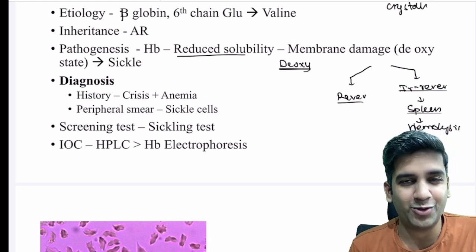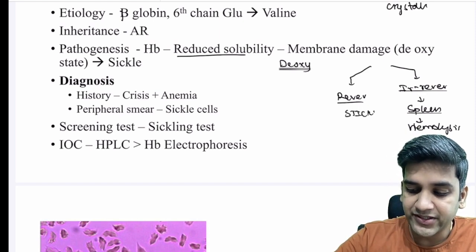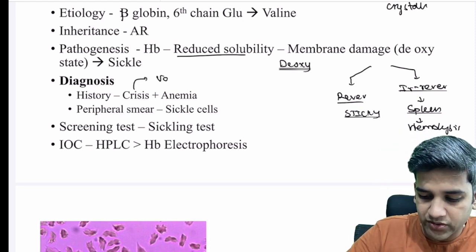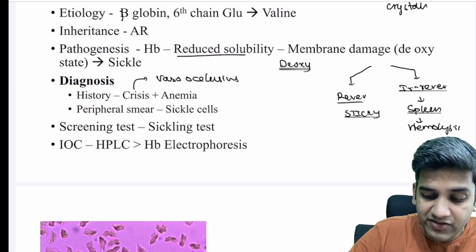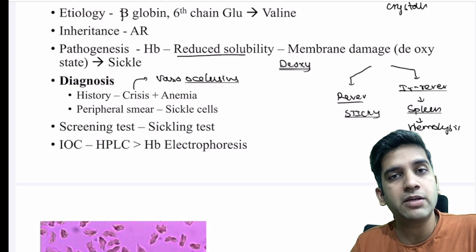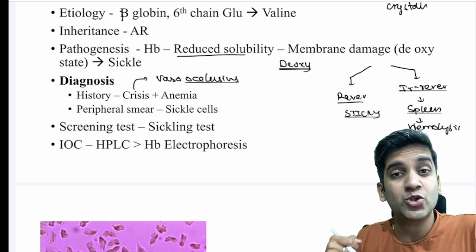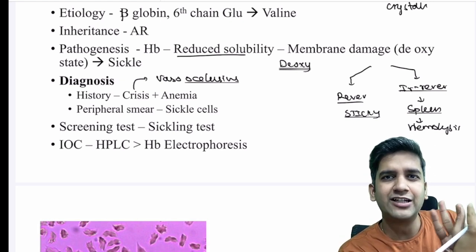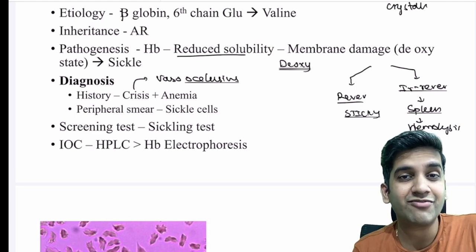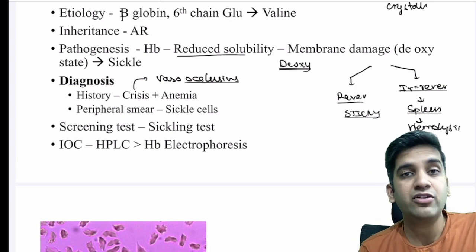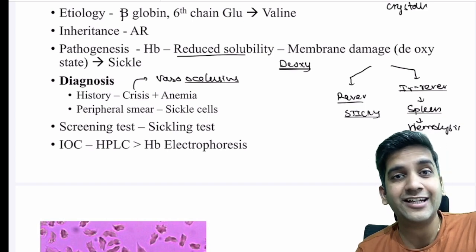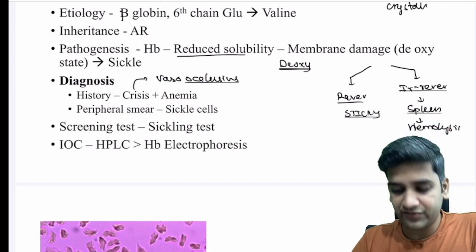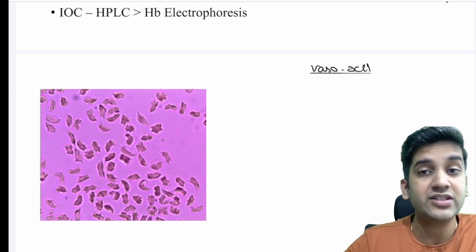The reversible sickle RBCs are actually the bigger problem — they become sticky, stack on top of one another, and block tiny vessels, causing vaso-occlusive crisis. Sickle cell anemia is more than just an anemia; it is a very painful disease due to tiny infarcts throughout the body. Features include unexplained abdominal pain, autosplenectomy from recurrent infarcts, dactylitis — the most common feature as the peripheral end arteries get blocked — and priapism, as venous drainage is impaired causing painful engorgement.